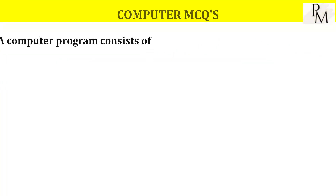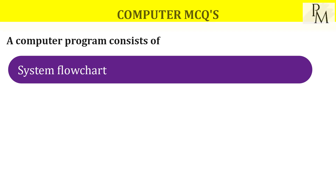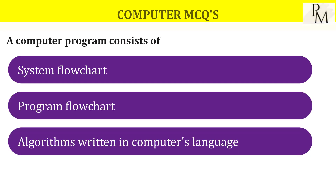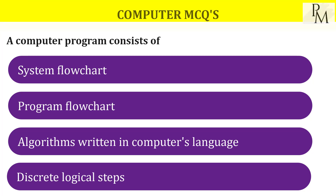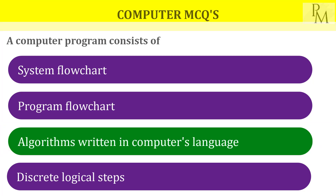A computer program consists of — the options are system flowchart, program flowchart, algorithm, and discrete logical steps. Of course a computer program consists of algorithm written in computer languages.